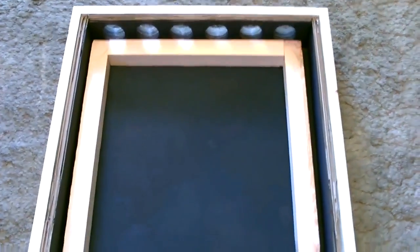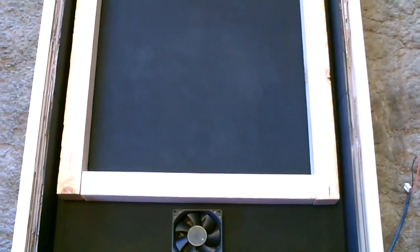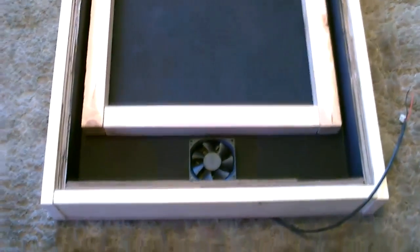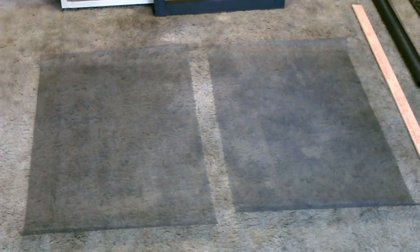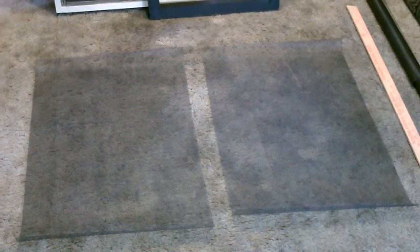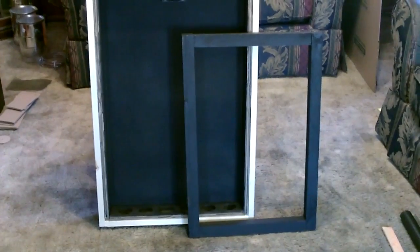We'll put the screen on the top and the bottom of the internal frame. Okay, and there's the two pieces of screen I cut from that roll of screen. I'm going to put those on the internal frame now.